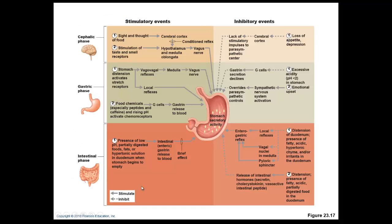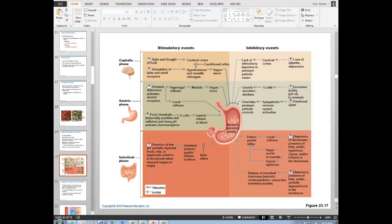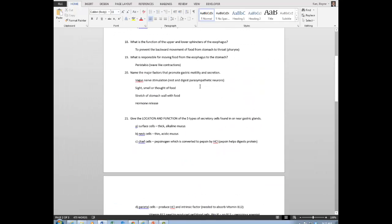Factors that stimulate digestion include thinking, seeing, and smelling food, as well as specific hormone release. Vagus nerve stimulation promotes digestion, and hormone release — like gastrin — also stimulates digestion. Reviewing the study guide, factors that stimulate stomach motility and secretion include parasympathetic nerve stimulation via the vagus nerve, sight, smell, thought of food, stretch of the stomach wall, and hormone release.